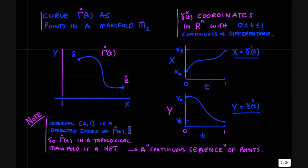Now here's a note for experts. The interval 0 to 1 is a directed index of the points of gamma. And so in a topological manifold, this gamma t is called a net. Sequences of numbers are countable. So net just means a continuum of points. And the points in the manifold generated by this index set of the interval is called a net. A little topological lingo there.